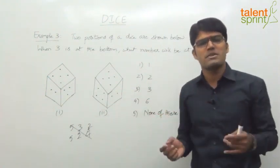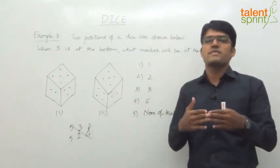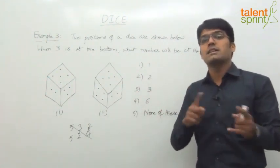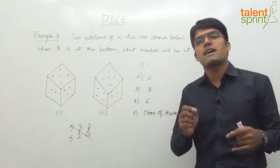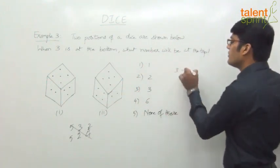Just try to visualize this. Again, face visualization. So, 3 is opposite to 4. So, this point again is very important. When you find two faces common in the given two positions, the third faces in both the positions have to be opposite. So, third face here is 3, third face here is 4. So, 3 is opposite to 4.